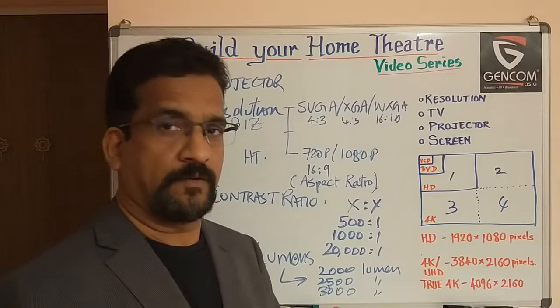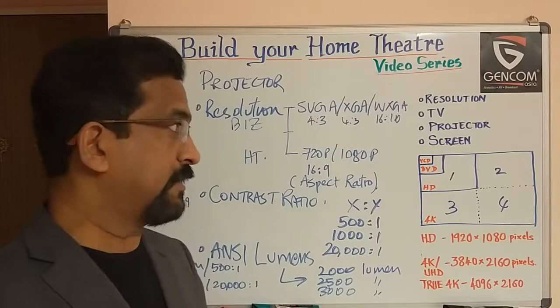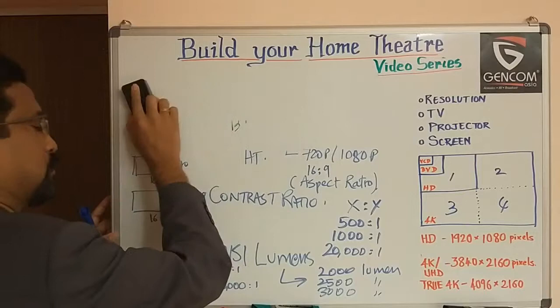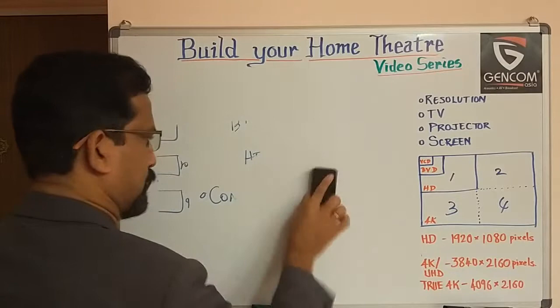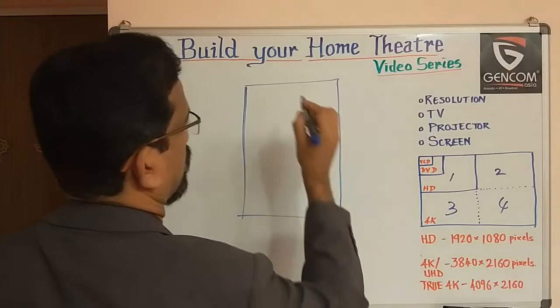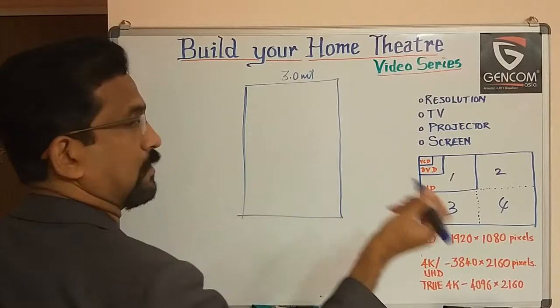There is one more parameter to consider, related to the screen. Finally, we are going to talk about screen size. How do you choose the screen size? Of course, we love the biggest screen we can have. Suppose this is your dedicated home theater room — what is the maximum size you can have? For example, if the room width is 3 meters, you can have a full 3-meter screen, or you can go for a 2.5-meter screen.